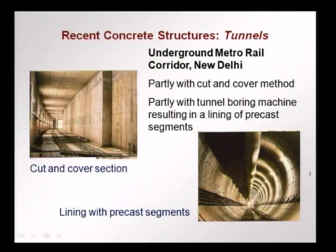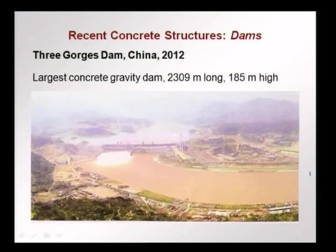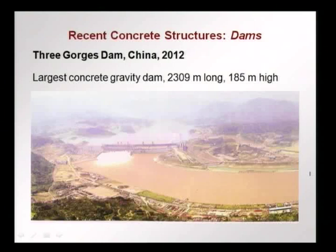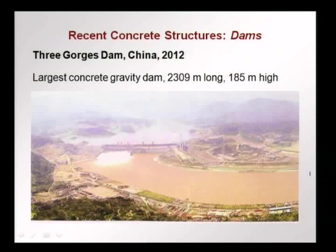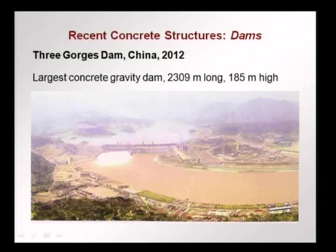In terms of dams, fewer are being constructed now due to environmental concerns about the huge impact on the environment and people living around them. However, a very large construction project was the Three Gorges Dam in China, mostly completed in 2012. It is the largest concrete gravity dam, about 2.3 km long and 185 metres high. It is a hydroelectric project expected to have a huge impact on water storage.